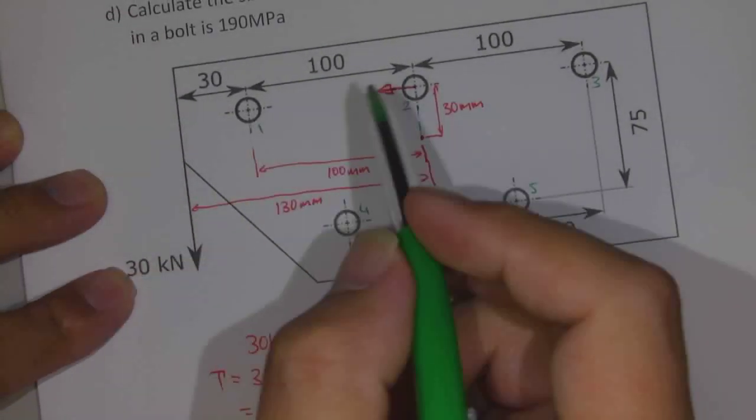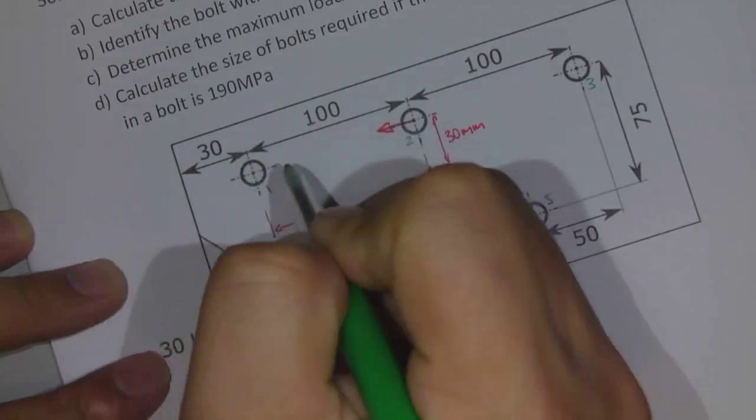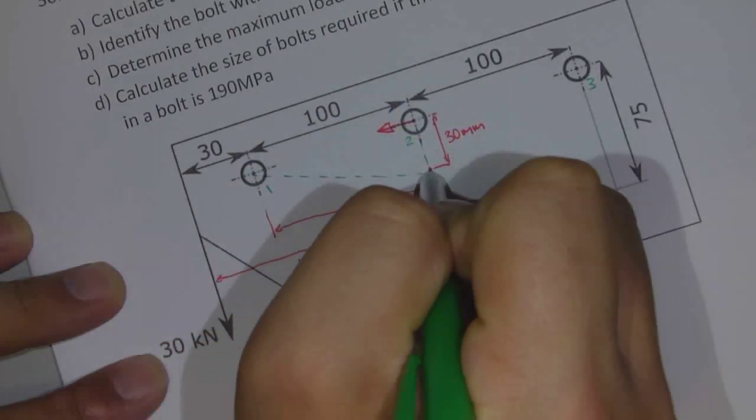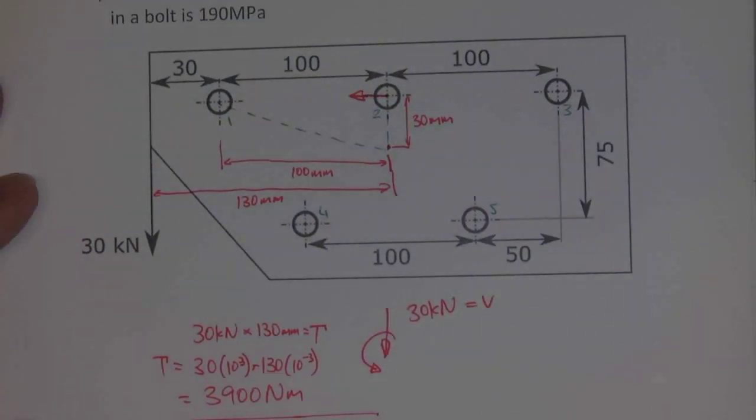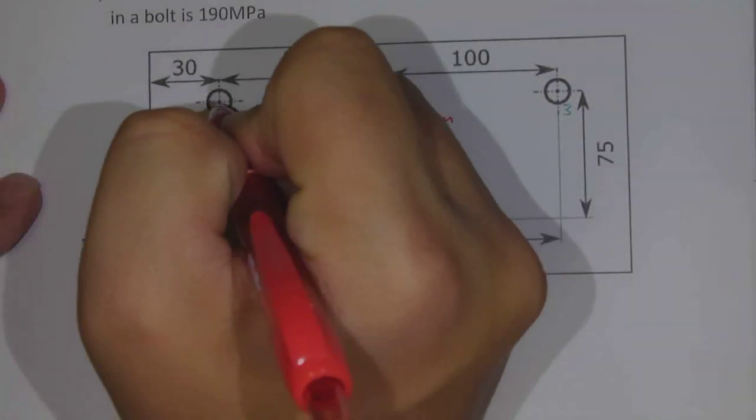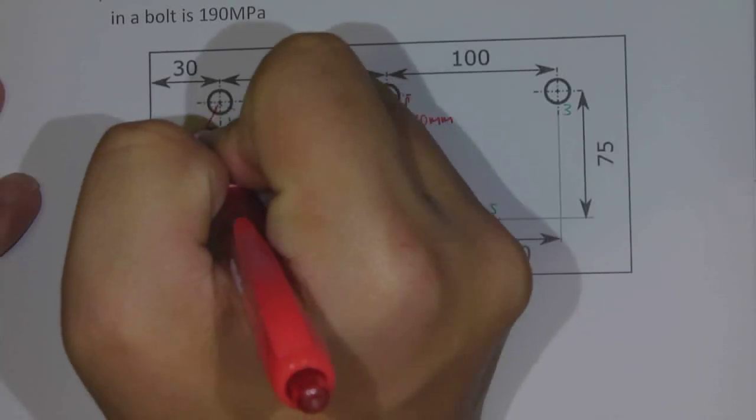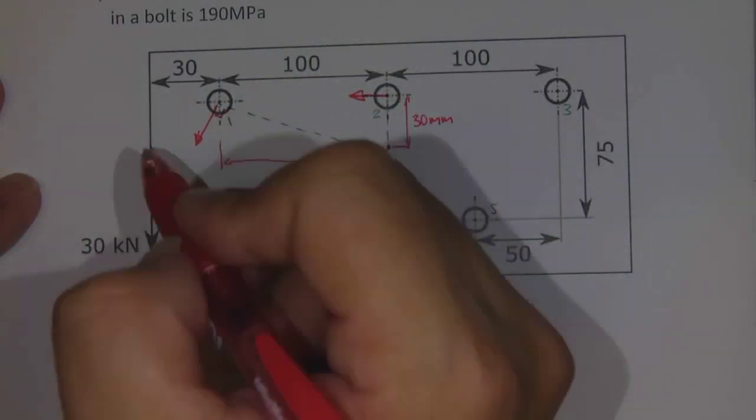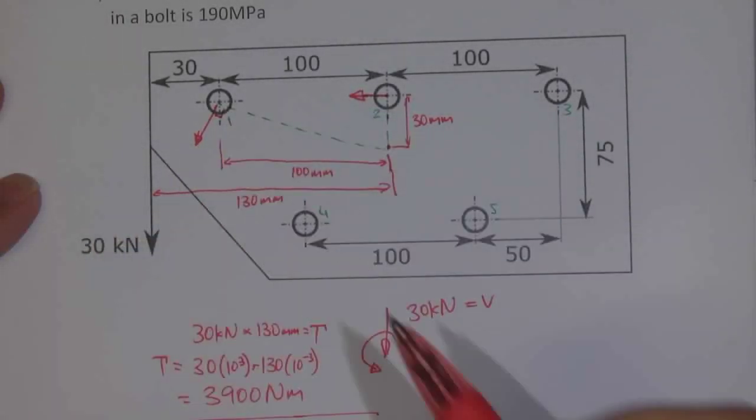For bolt number 1 I can draw a radial line to that point and we'll see a force acting at an angle of 90 degrees, and we'll look at calculating that value soon.